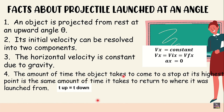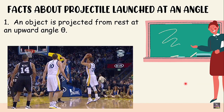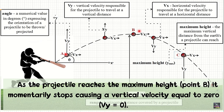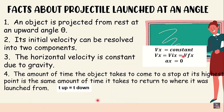The amount of time the object takes to come to a stop at its highest point is the same amount of time it takes to return to where it was launched from. For example, from the launch point reaching the maximum height — if that takes two seconds — then from the maximum point back down to the same level as the starting point also takes two seconds. The time for the projectile to go up to maximum height is the same time for the object to come back down to the original position.